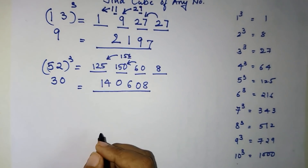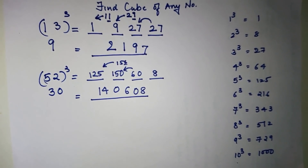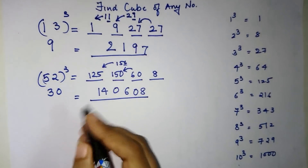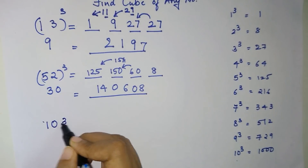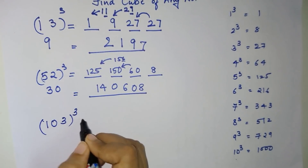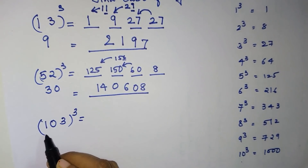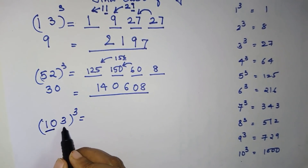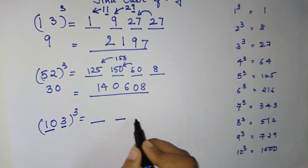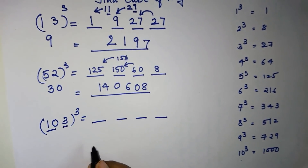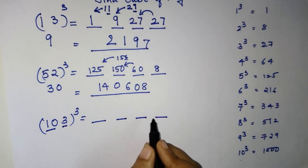Now you might be wondering what we do to find the cube of a three-digit number. Let's take 103. We divide it into two parts: the first part is 10 and the last part is 3. Again we will have four parts to our answer, with 10 as the first number and 3 as the last number.